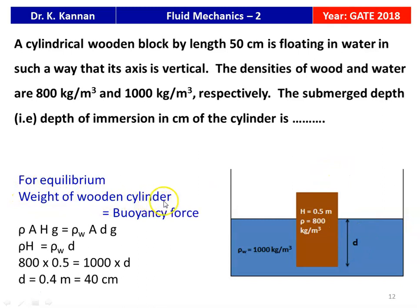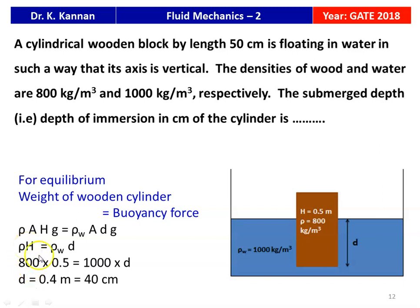For equilibrium, weight of the wooden cylinder equals the buoyancy force: ρ × A × H × g = ρ_w × A × d × g. Cancelling common terms A and g: ρ × H = ρ_w × d. Substituting values: 800 × 0.5 = 1000 × d. Solving: d = 0.4 m = 40 cm. The answer is 40 centimeters — the depth to which the wooden cylinder is immersed.